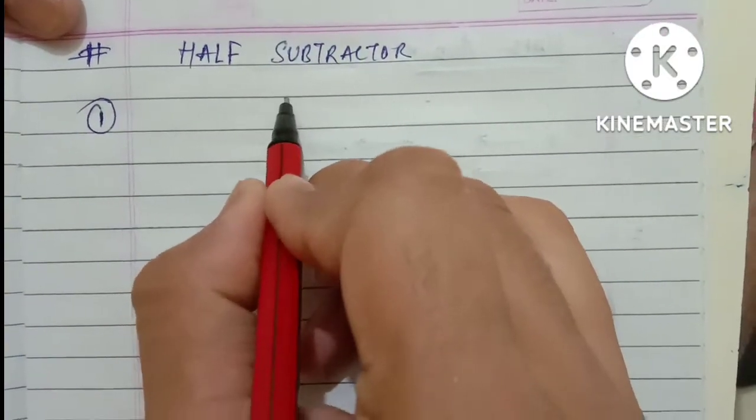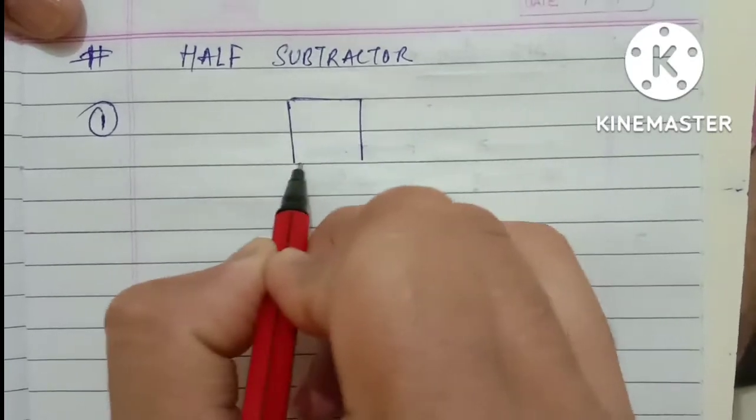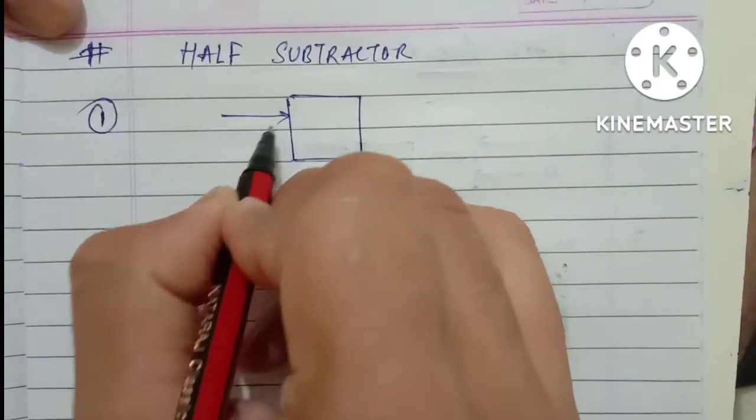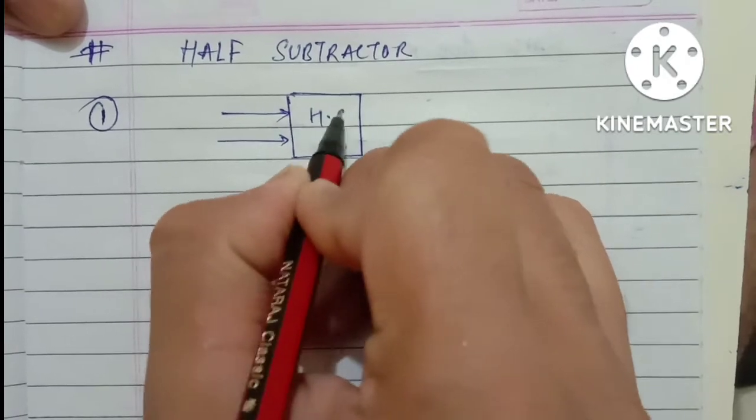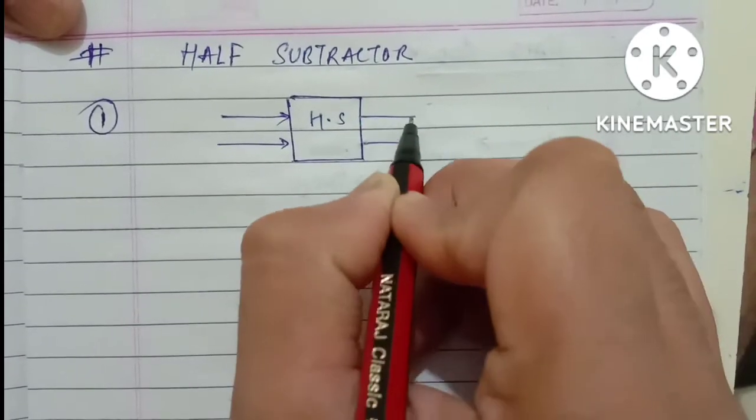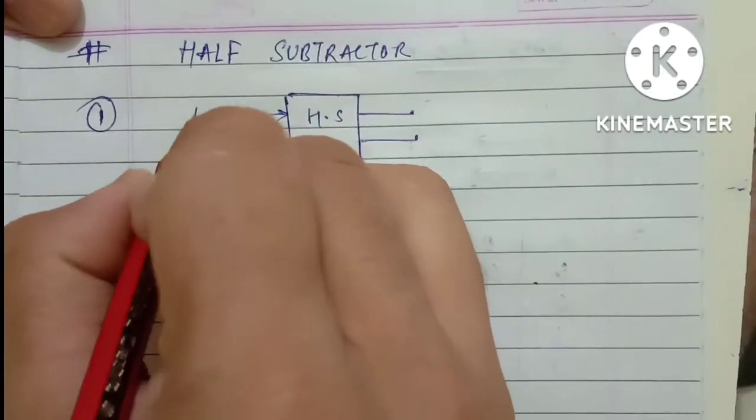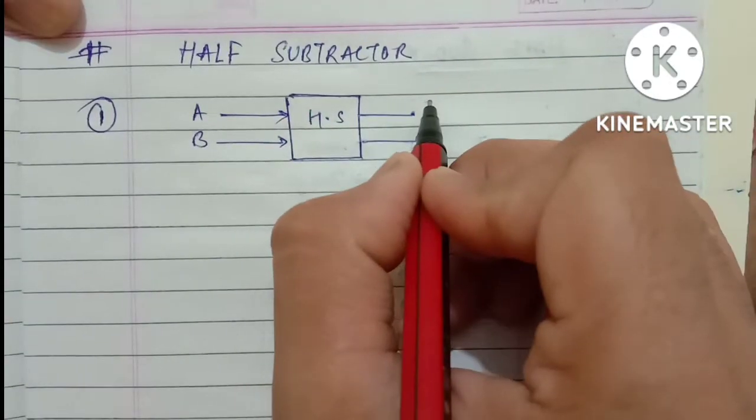Same thing, half means two bit. Two bit subtraction will be there, so two inputs will come. And you will write here half subtraction. You will get simultaneously two outputs also.